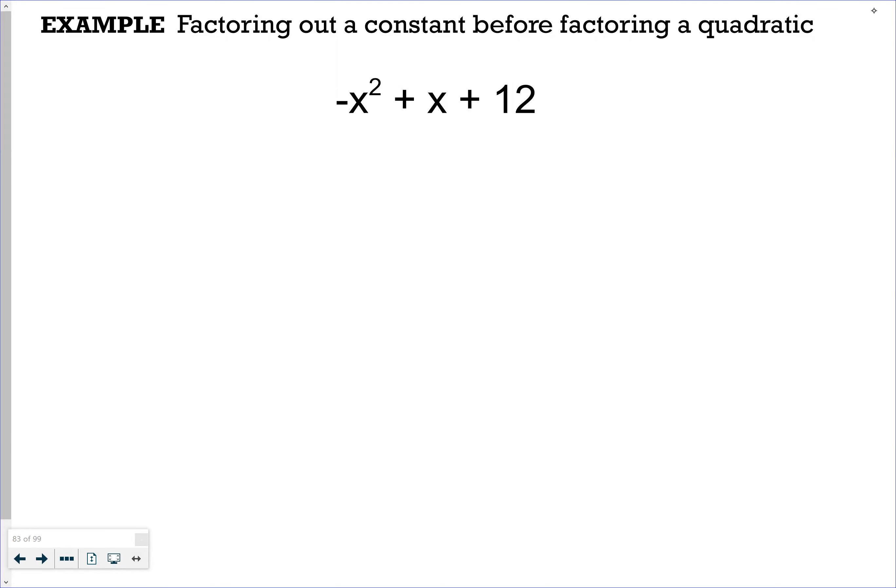We're factoring a quadratic which is -x² + x + 12. To begin, we're going to factor out a constant because the leading coefficient is negative, and in general I prefer to factor quadratics with the leading coefficient positive; it just makes it easier.